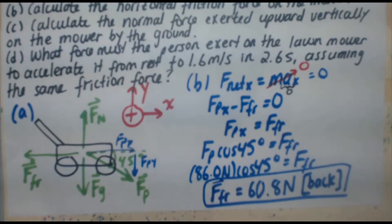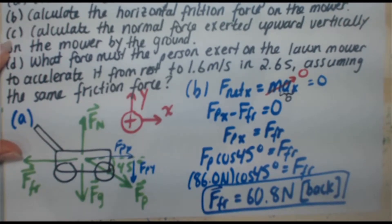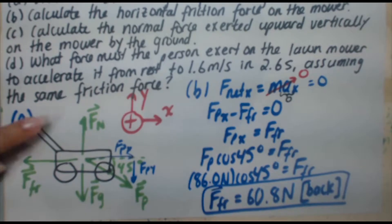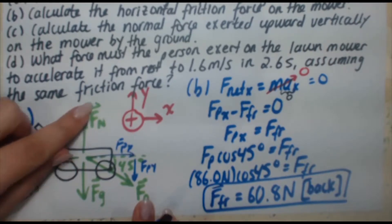Okay, now Part C. Part C says, calculate the normal force exerted upward vertically on the mower by the ground. Okay, so for Part C, we're looking for this force right here. So before I move on to another piece of paper here, let's just take a look at this free body diagram.